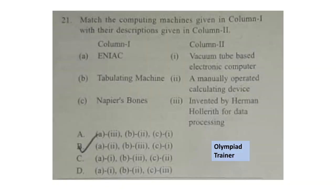Question 21: Match the computing machines given in column 1 with their descriptions given in column 2. Column 1: A. ENIAC, B. Tabulating machine, C. Napier's bones. The correct answer is option C. A — ENIAC matches with description 3. B — Tabulating machine was invented by Herman Hollerith. C — Napier's bones is a manually operated calculating device.